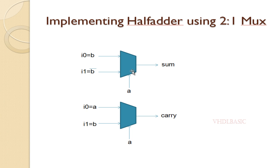You might blindly say that we only need two muxes to implement the half adder, but if you look carefully there is a NOT gate needed. To compute B_bar, we need one more 2:1 mux. So totally, three muxes are required to implement the half adder.